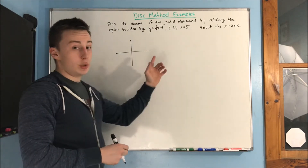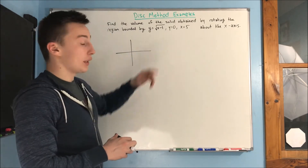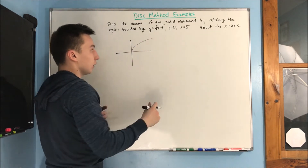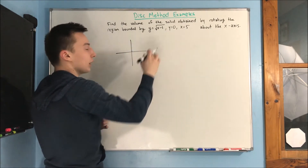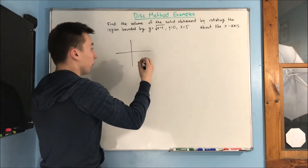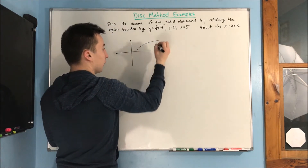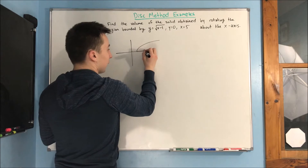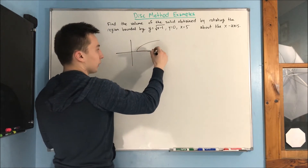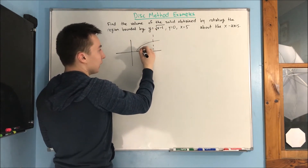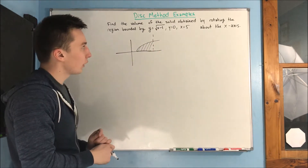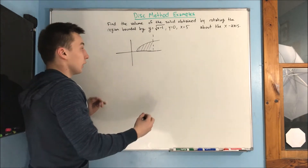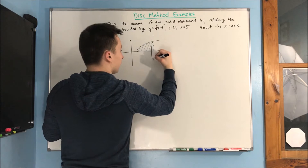What does y equals rad x minus 1 look like? You should know what the minus 1 does — a rad x graph looks like a square root curve, but that minus 1 is going to shift it over 1. Our bounds are y equals 0, which is this line, and x equals 5. We are going to rotate about the x-axis, so we get our volume that way.